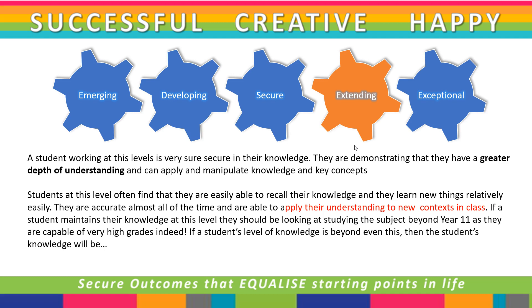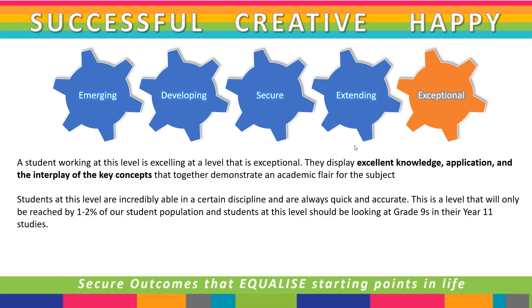If a student's level is even beyond extending, their knowledge will be deemed as exceptional. A student working at this level is excelling in a way that is exceptional. They display excellent knowledge, application and the interplay of key concepts that together demonstrate an academic flair for the subject. Students at this level are incredibly able in a certain discipline and are always quick and always accurate. This is a level that will only be reached by one to two percent of the student population, and students at this level should be targeting grade nines — the highest grade — in their year 11 studies.